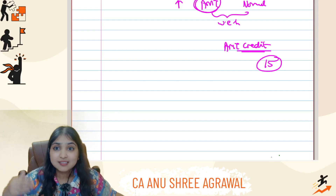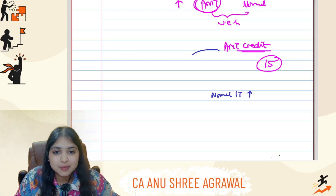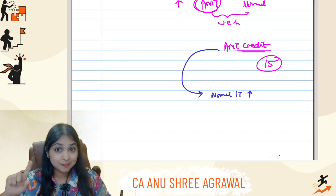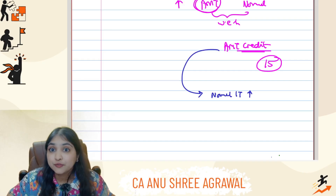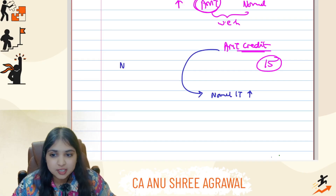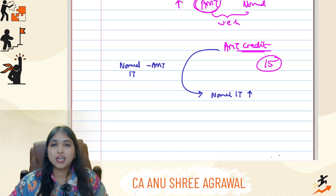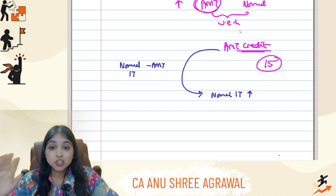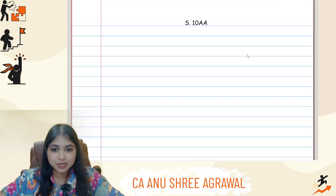In any of those 15 years, if normal income tax is higher, you will pay normal income tax. Against this, you can adjust AMT credit — but don't forget, even then you can't adjust AMT credit fully. You can adjust only to the extent of the difference between normal income tax and AMT. That's your quick brush-up on AMT just before your examination today.